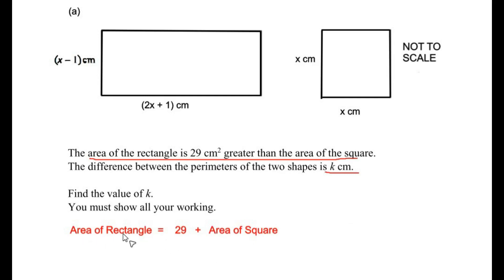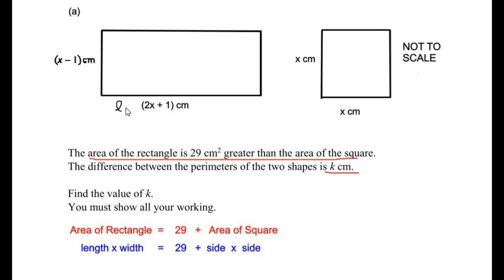We know that the area of a rectangle is length times width, and the area of a square is side times side. So area of rectangle, length times width, equals 29 plus side times side. The length of the rectangle is 2x plus 1 and the width is x minus 1 as given in the diagram. For the square, the side is x.